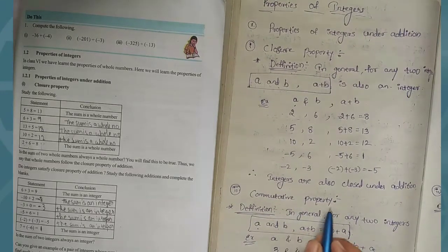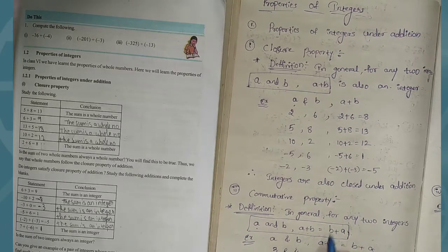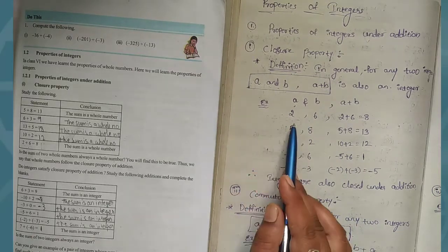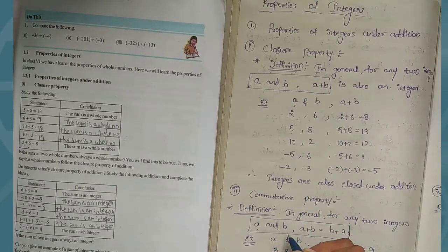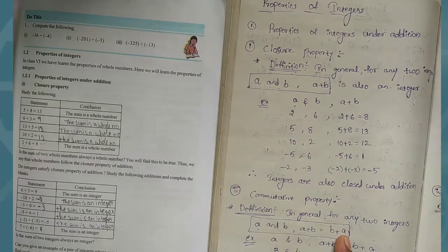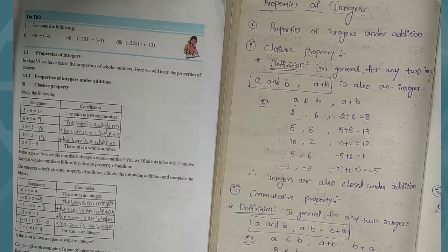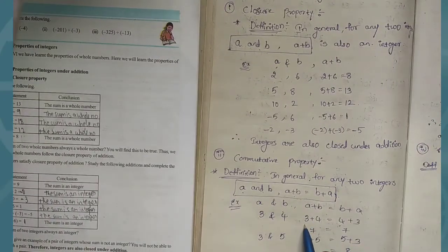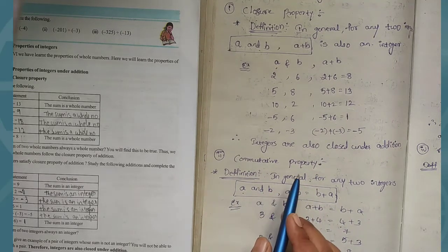Next, commutative property. Here is the definition: in general, for any integers, a plus b equals b plus a. The closure property says a plus b is an integer, but the commutative property says a plus b equals b plus a — the order does not matter. For example, 3 plus 4 is 7, and 4 plus 3 is 7. This condition is satisfied, so commutative property is satisfied.